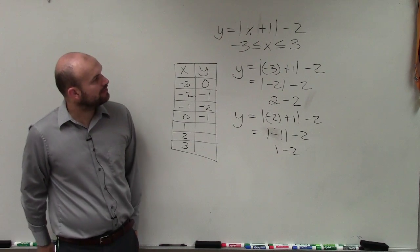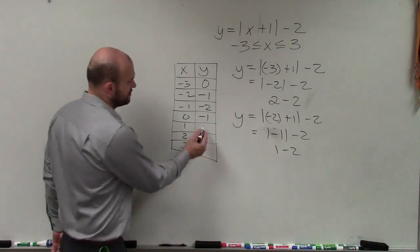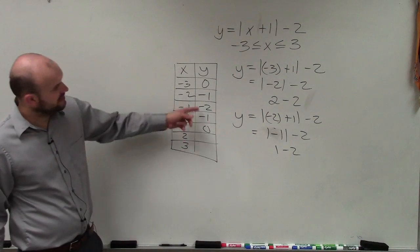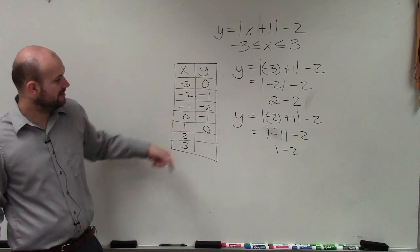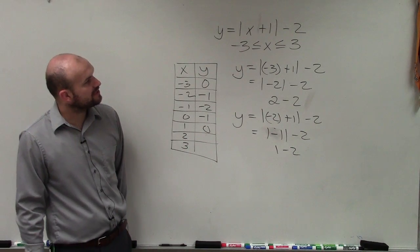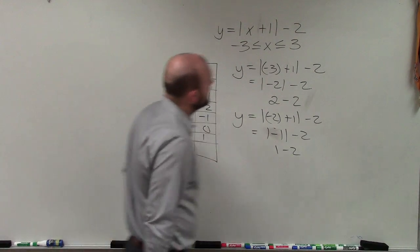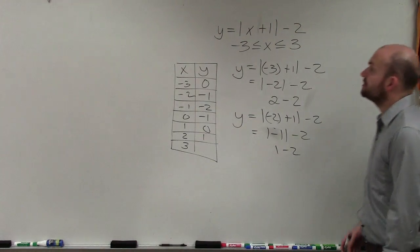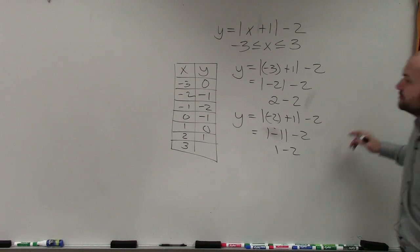If I plug in 1, 1 plus 1 is 2, absolute value of 2 is 2, 2 minus 2 is 0. And hopefully you guys kind of see there's a little bit of a pattern here. They're kind of the same on both sides of that 2, right? So let's do 2. 2 plus 1 is 3, absolute value of 3 is 3, 3 minus 2 is 1. And 3, 3 plus 1 is 4, absolute value of 4 is 4, 4 minus 2 is 2.